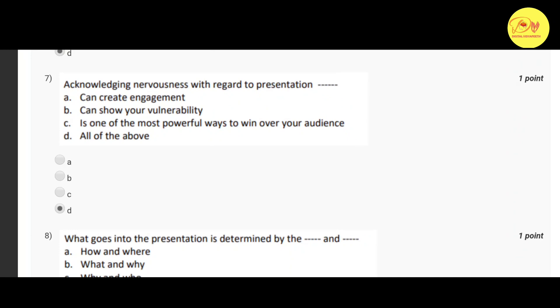Our seventh question is acknowledging nervousness with regard to presentation. Correct option is D, all of the above, that is can create engagement, can show your vulnerability, and is one of the most powerful ways to win over your audience.